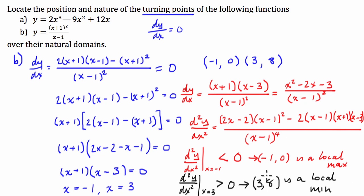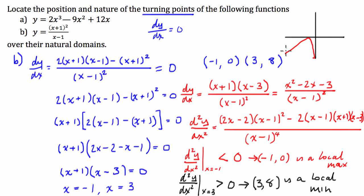You might think that doesn't make sense because the y-value at the local minimum is bigger than at the local maximum. But if we look at this function and were to draw it, you'd probably find it has features like this — the function goes up to (negative 1, 0) then comes back down and asymptotes, and then has the (3, 8) part going up. So you can have a local max with a lower y-value than a local min due to the shape of the function.